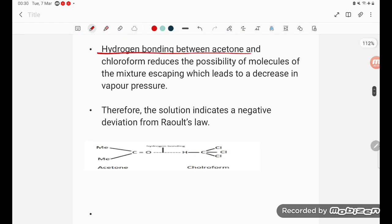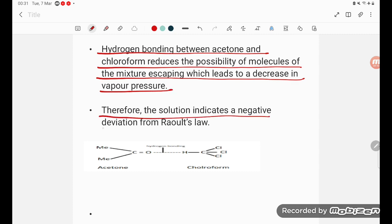Hydrogen bonding between acetone and chloroform reduces the possibility of molecules of the mixture escaping, which leads to a decrease in the vapor pressure. Therefore, the solution indicates negative deviation from Raoult's law.